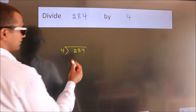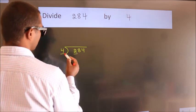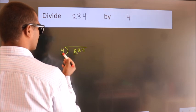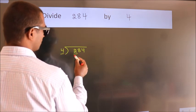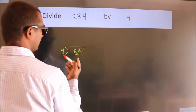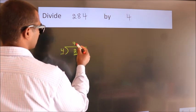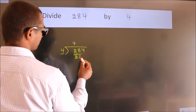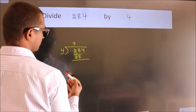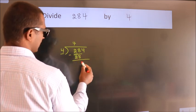Next. Here we have 2, here 4. 2 is smaller than 4. So we should take 2 numbers, 28. When do we get 28? In 4 table, 4 times 7 is 28. Now we should subtract, we get 0.